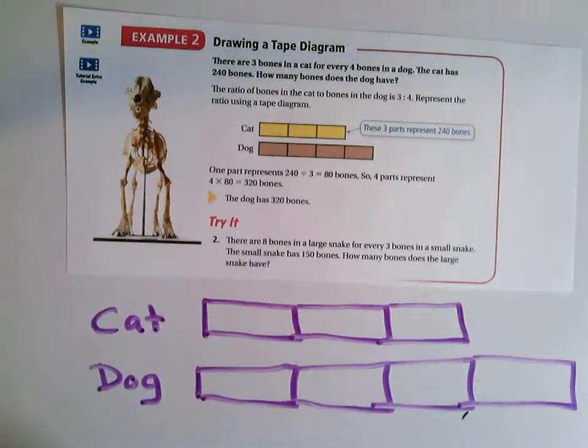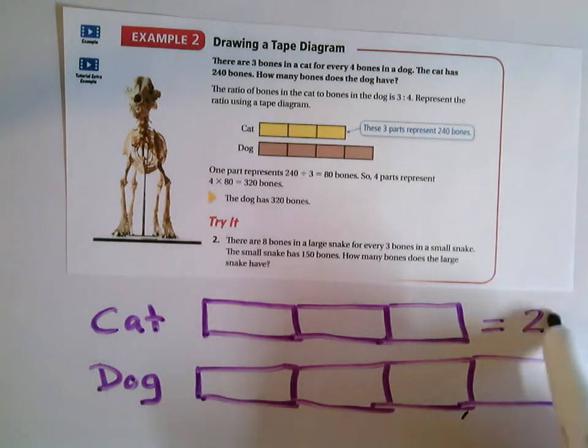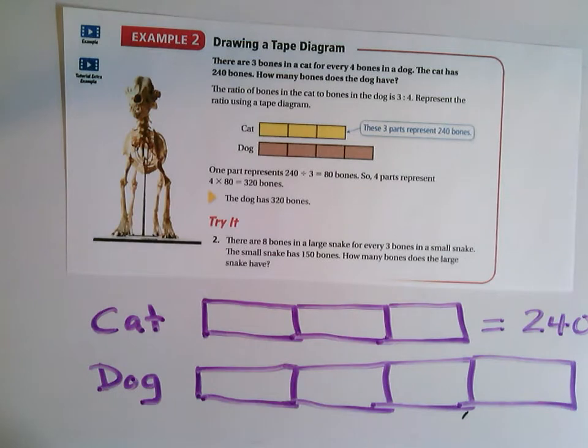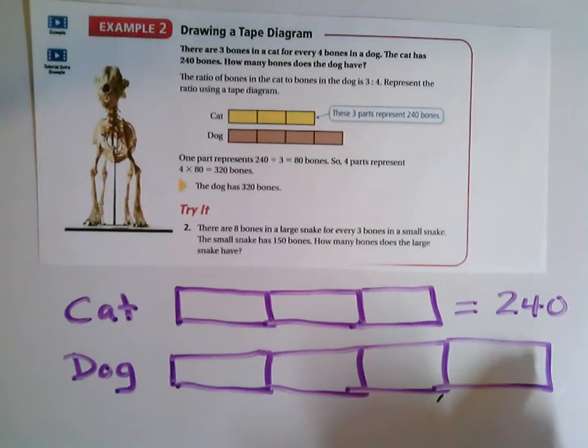All right, now it says that the cat has 240 bones. So these three pieces represent 240. And we need to figure out, well, what is the dog going to equal? We already know, if the dog has four, so the cat's three, we know that the dog is going to have a larger number than 240.